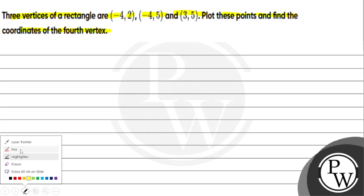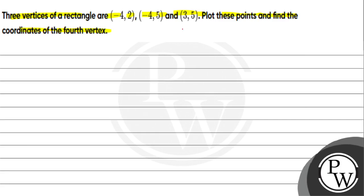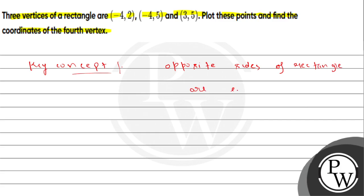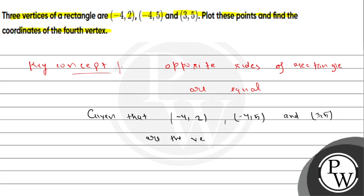So what do we do here? The vertices given are — the rectangle vertices given are — plot them, and the fourth vertex will find out the rectangle. The opposite side of the rectangle is equal. Given that minus 4,2; minus 4,5; and 3,5 are the vertices of the rectangle.